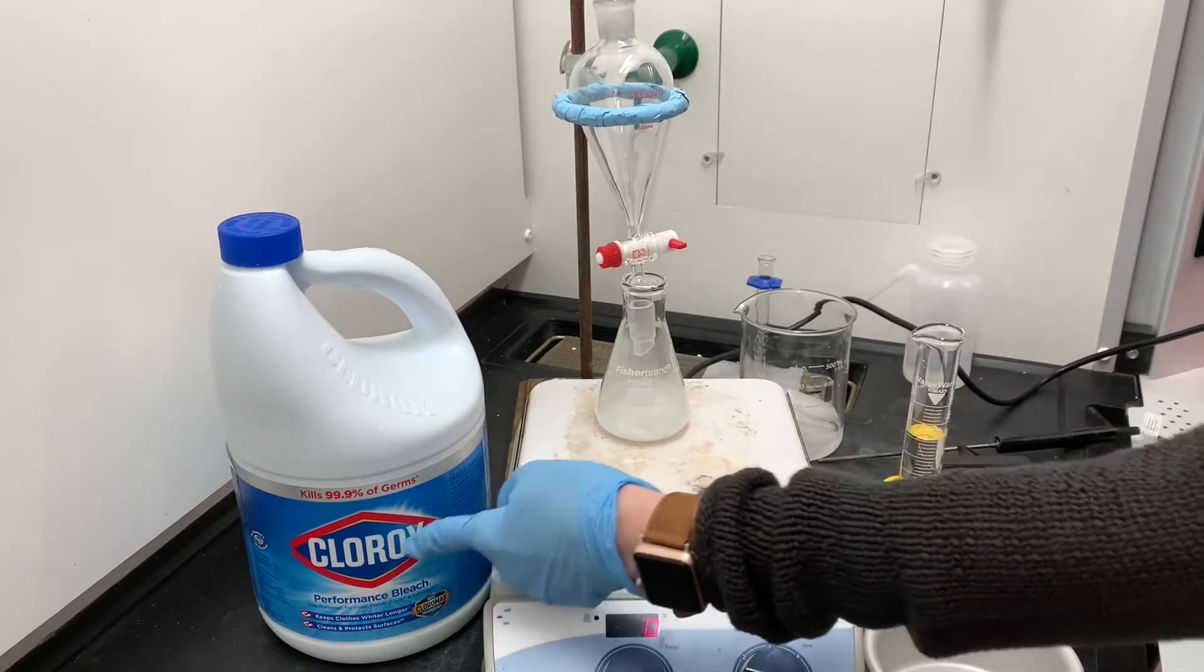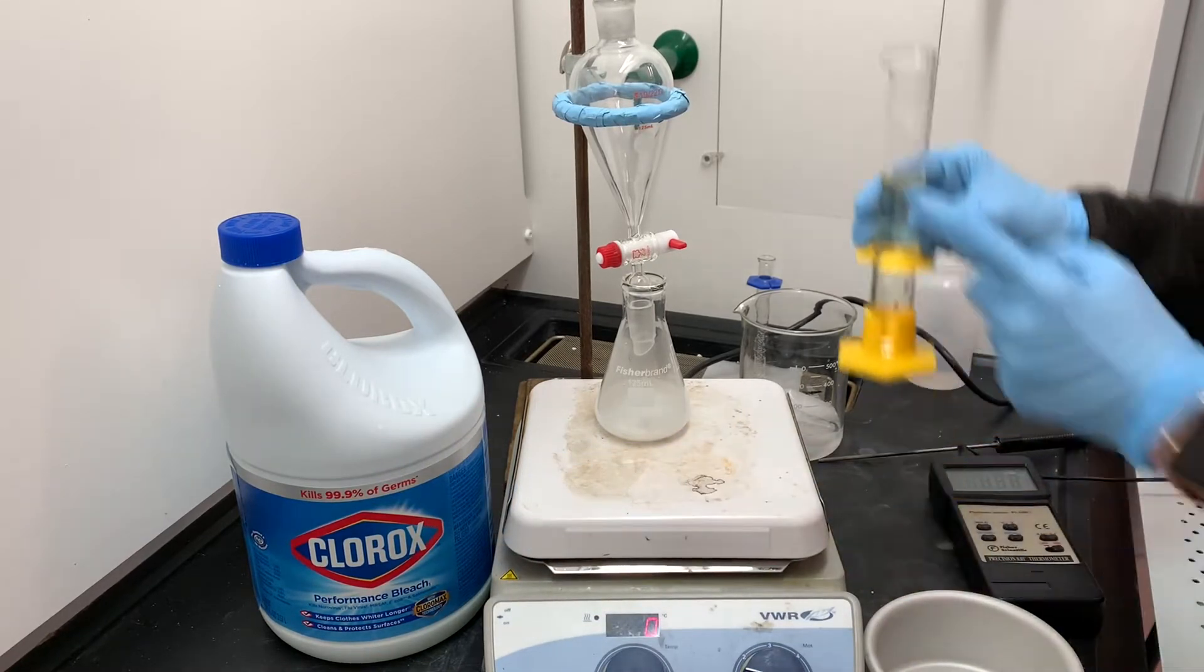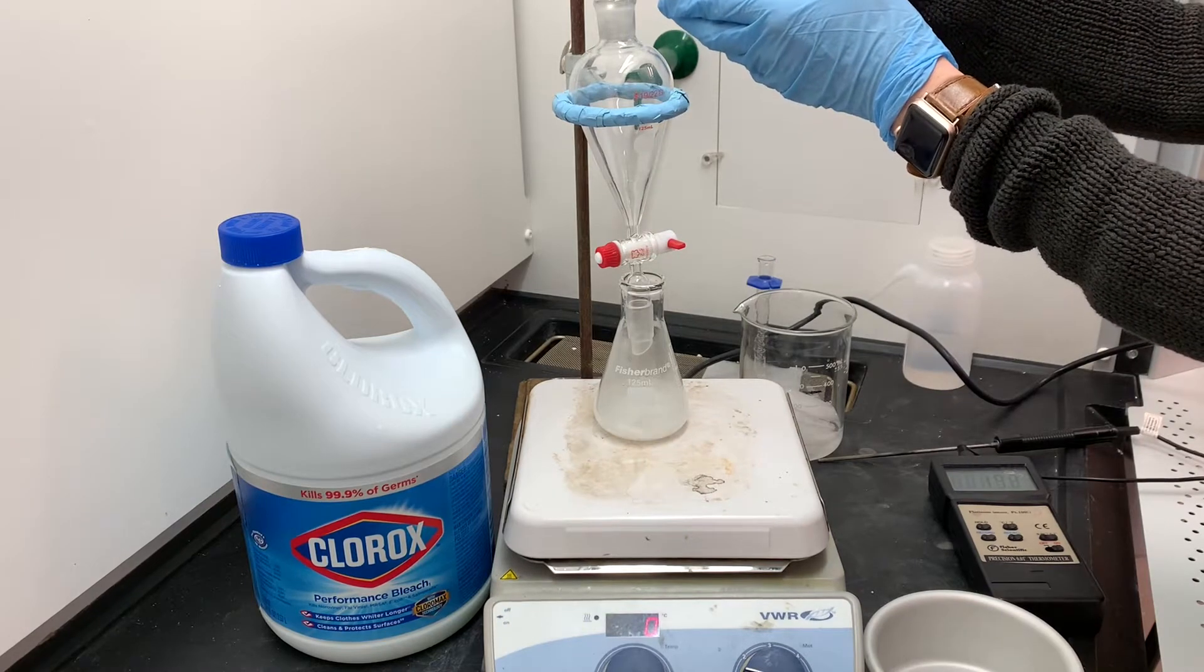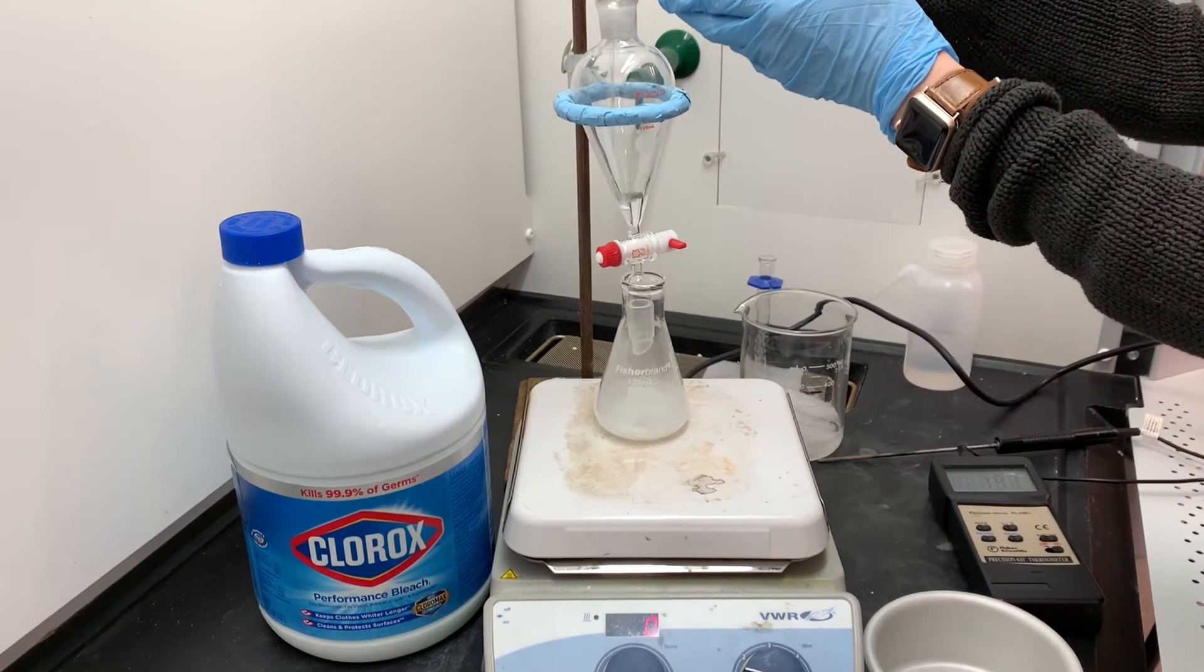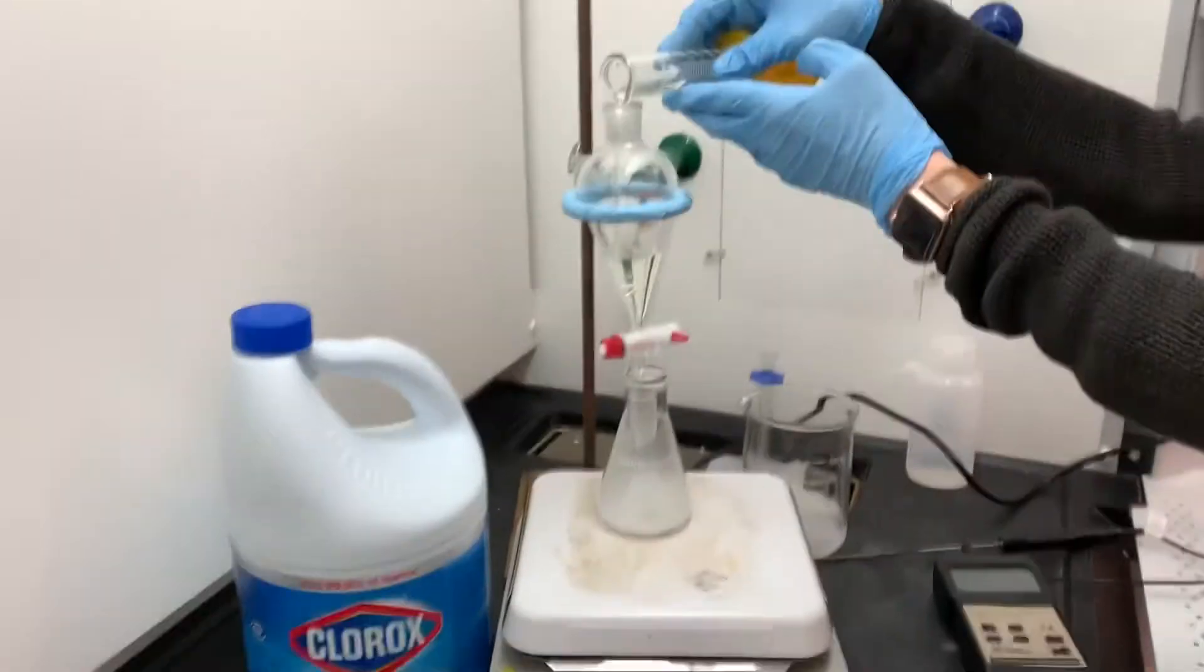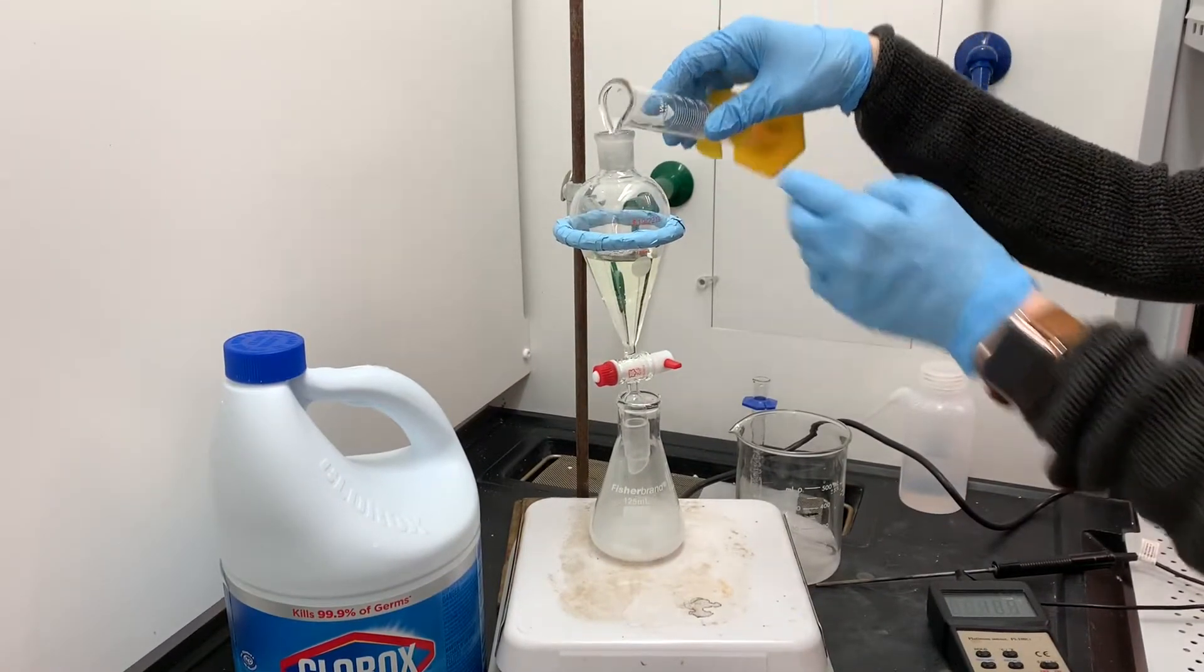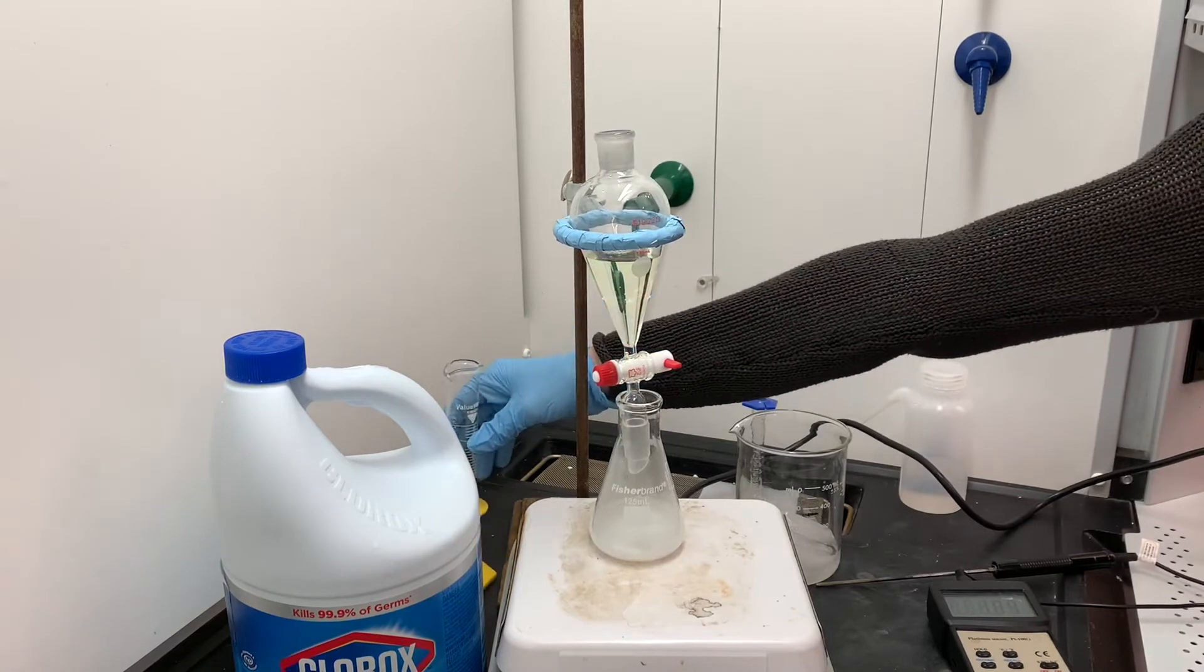We're now going to add some more bleach. I've got 40 milliliters measured out and I'm going to be using a separatory funnel to add the rest of this bleach. I want to add it slowly over a period of at least 10 minutes. This is a really exothermic reaction, so I don't want to add too much at once or it will get too hot.